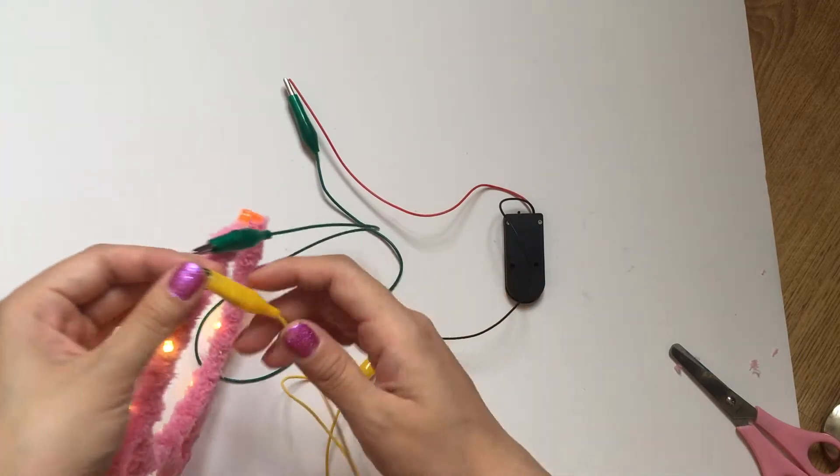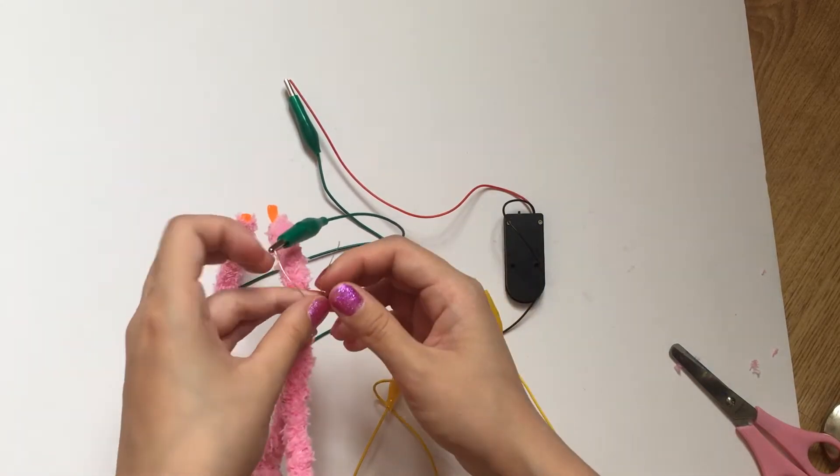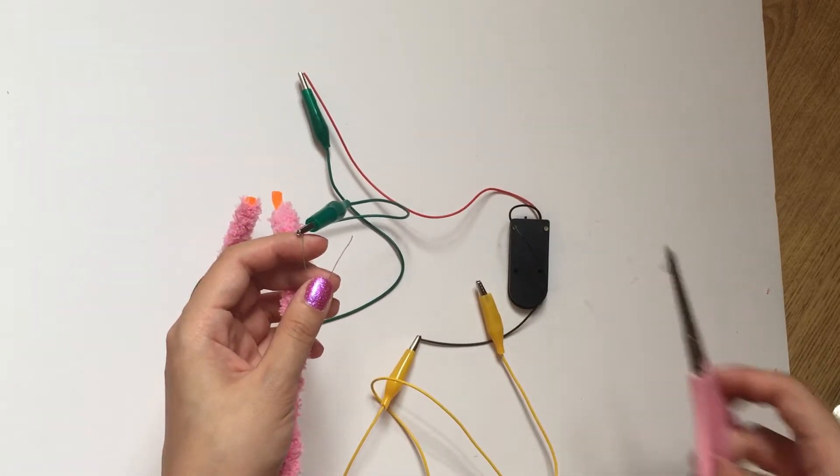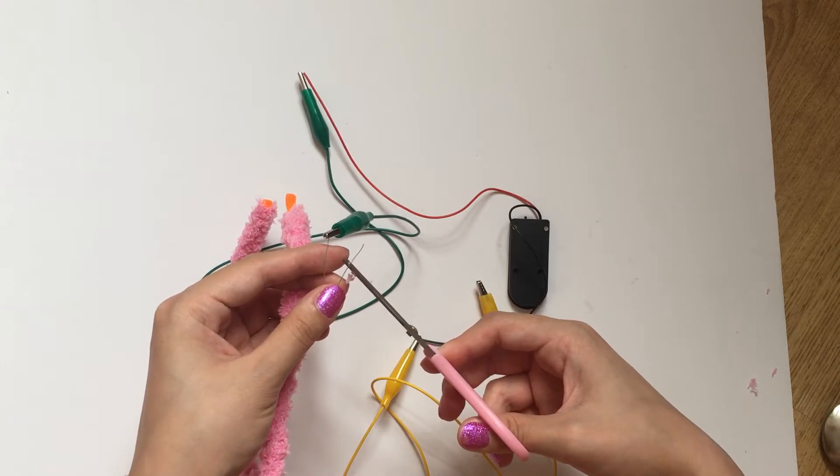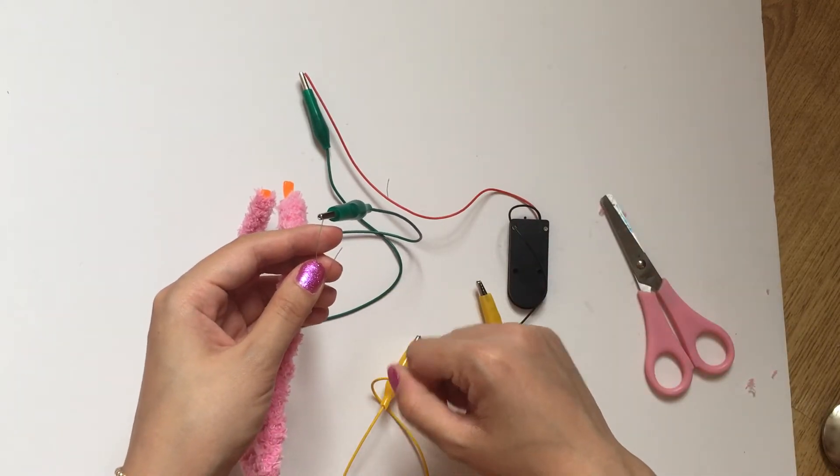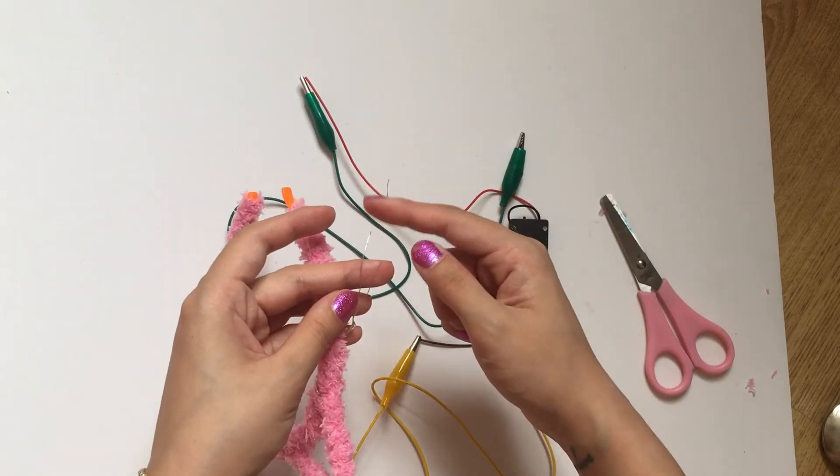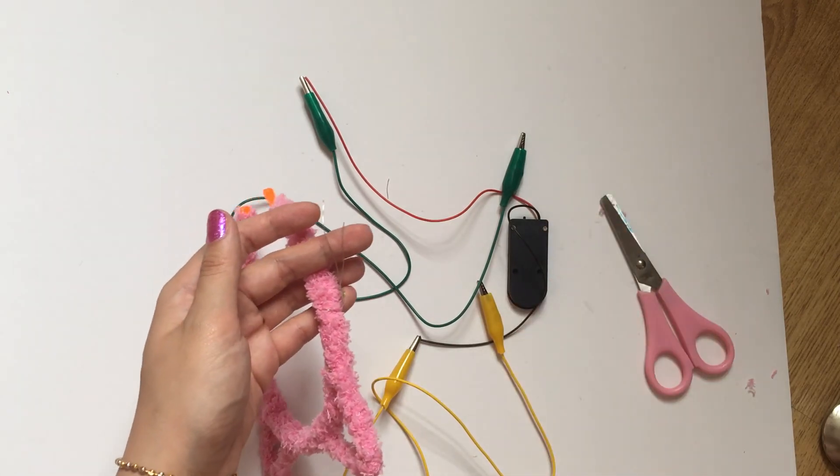So now that we remember that, we should try to give them different lengths. What I'm going to do here is cut the negative terminal shorter than the positive terminal. So this way, I know that without the crocodile clips, this is the positive and this is the negative. We can now proceed with soldering.